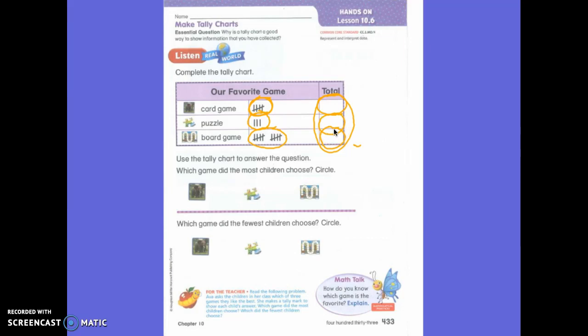So now we're going to use the tally chart to help us answer the questions because it has the information that I need to know. So which game has the most tally marks or which one did the children choose most often? The board games. So do you see how my three options are right here? So I want you to circle the board games.